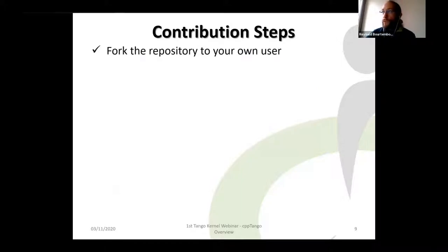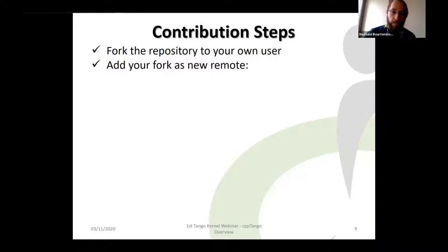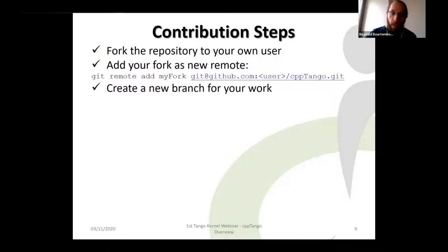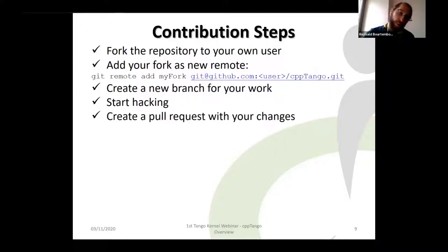Contribution steps are described in the contributing.md file. Fork the repository to your own user, add your fork as a new remote, create a new branch for your bug fix or new feature, start hacking in your branch, and then create a pull request from your branch with your changes.